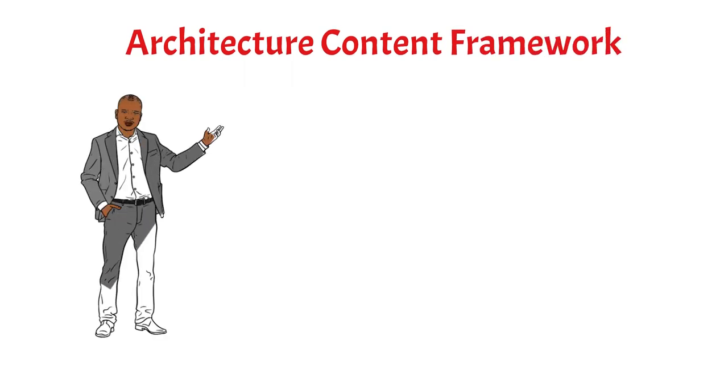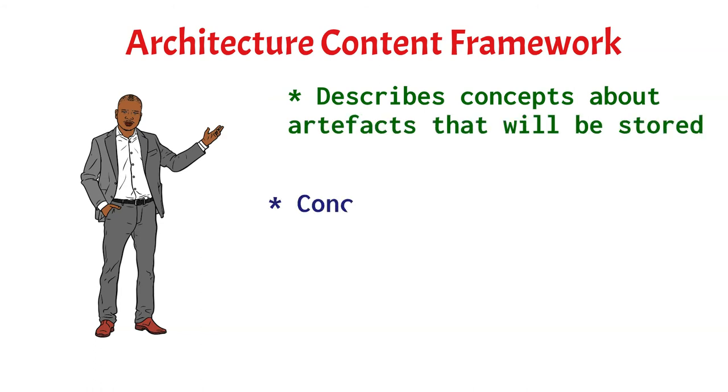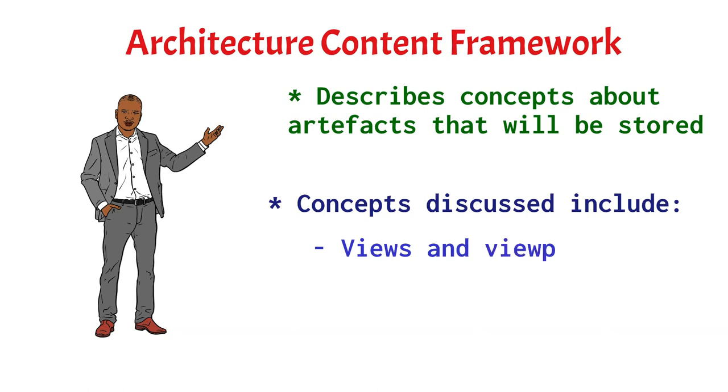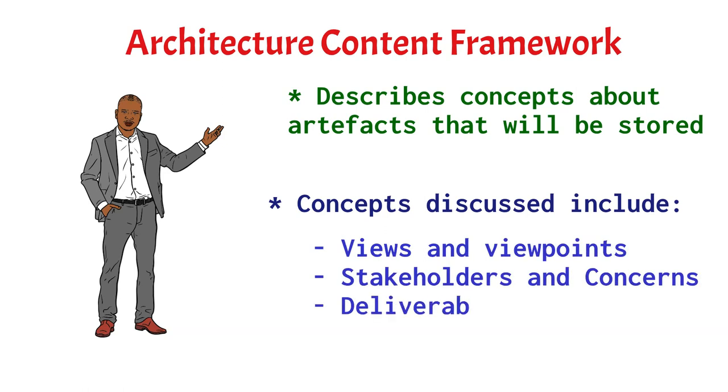The fourth part of TOGAF is the architecture content framework, where we describe the concepts around the artifacts that will be stored, some of the concepts discussing the views and viewpoints, stakeholders and concerns, as well as architecture deliverables.